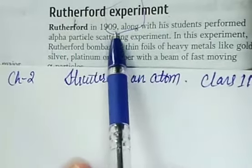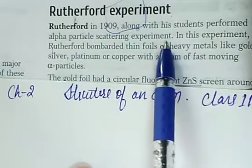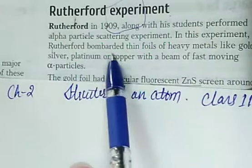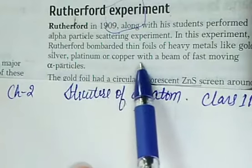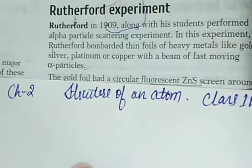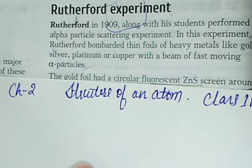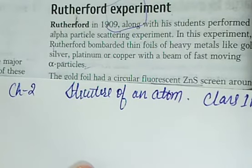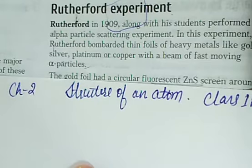Rutherford in 1909, along with his students, performed the alpha particle scattering experiment. In this experiment, Rutherford bombarded thin foils of heavy metals like gold, silver, platinum, and copper with a beam of fast moving alpha particles. By this experiment, he was knowing the relative positions of electrons and protons within the atom.